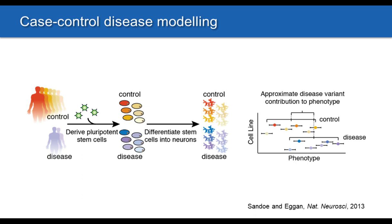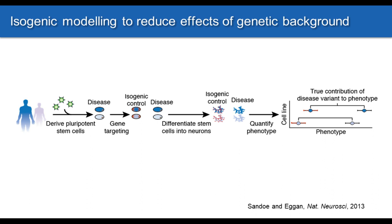As a general principle, one can model human diseases in vitro by the case control method, where one could take a series of control patients and patients affected with a particular disease, derive induced pluripotent stem cells from them, and differentiate them into a cell type of interest that's affected in disease — for example, neurons if you're studying neurological diseases. Since these are unrelated patients with diverse genetic backgrounds, there can be considerable variability due to not just the disease phenotype but also those different genetic backgrounds.